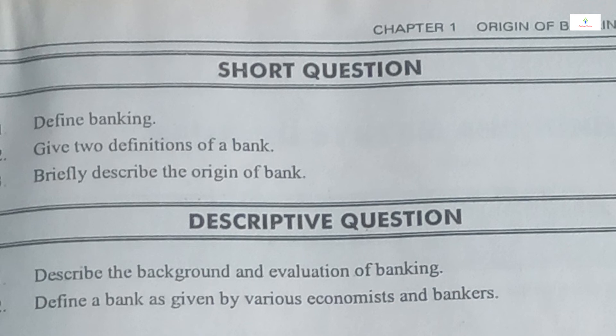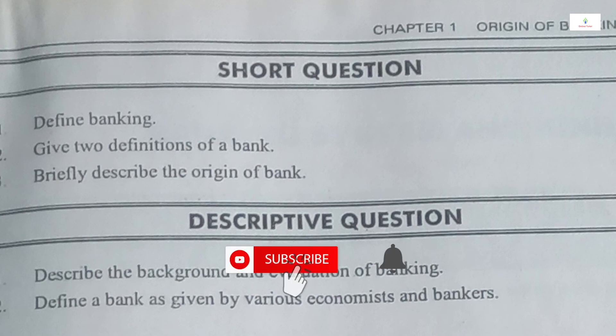You have to cover the origin, the background, and the details. Whatever you need to include, write everything under headings. We also talked about three groups — do include them too, because in banking history the three groups are very important. We have to cover them every time.